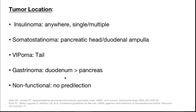Location depends on the tumor type: insulinoma can be single or multiple anywhere in the pancreas; somatostatinoma — generally pancreatic head or duodenal ampulla; VIPoma — present in the tail; gastrinoma — most commonly present in the duodenum. Non-functional tumors have no predilection and can be present throughout the pancreas.